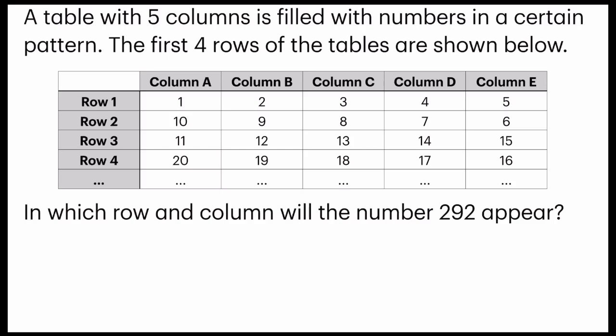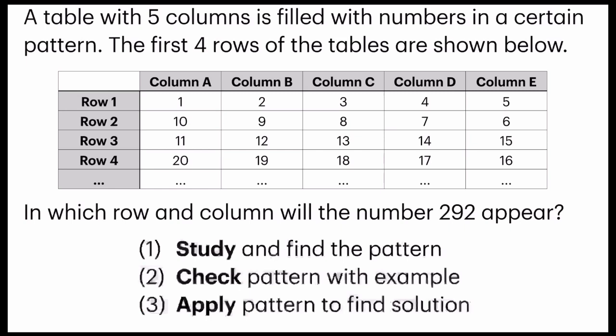A table with five columns is filled with numbers in a certain pattern. The first four rows of the tables are shown below, in which row and column will the number 292 appear. There are three ways that I have come up with that will help you solve questions relating to pattern in what way.